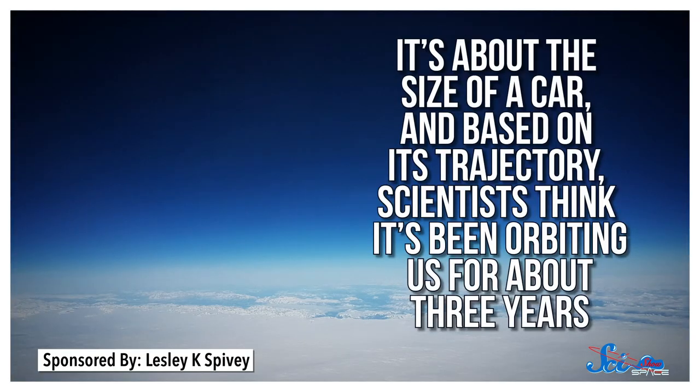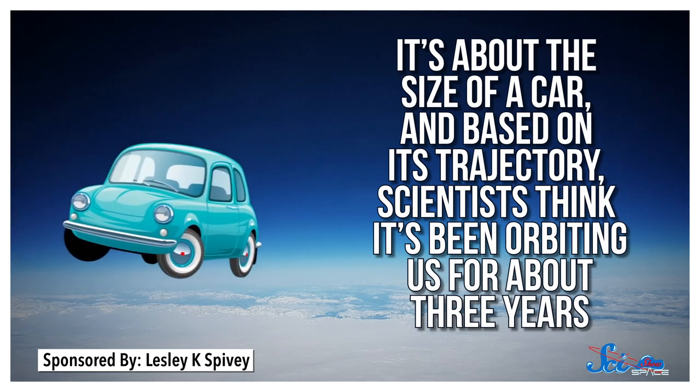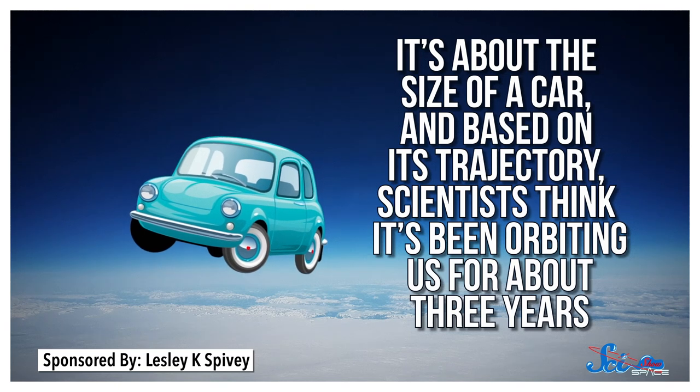Much closer to home last week, we also got an update in cute astronomy news — Earth has a little baby moon. A mini-moon. It's about the size of a car, and based on its trajectory, scientists think it's been orbiting us for about three years. We've probably just been missing it because it's so small.